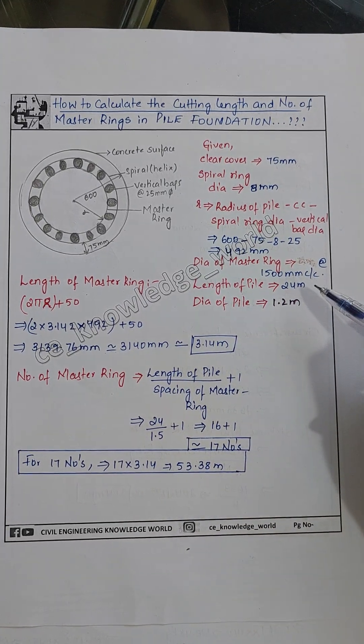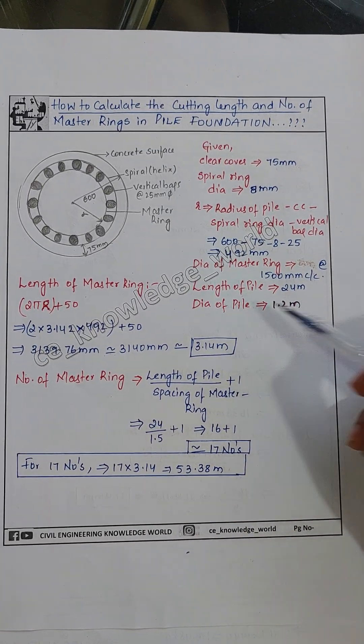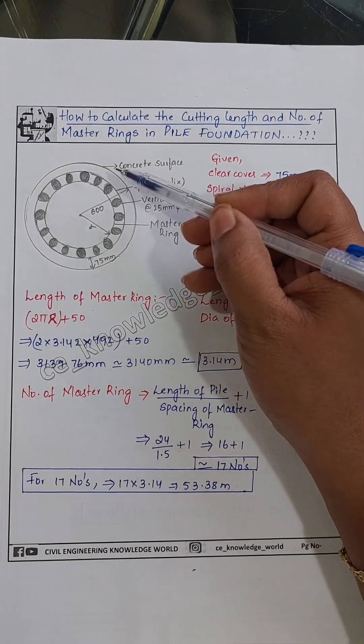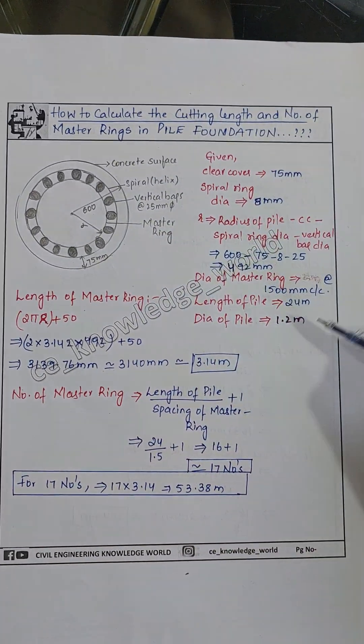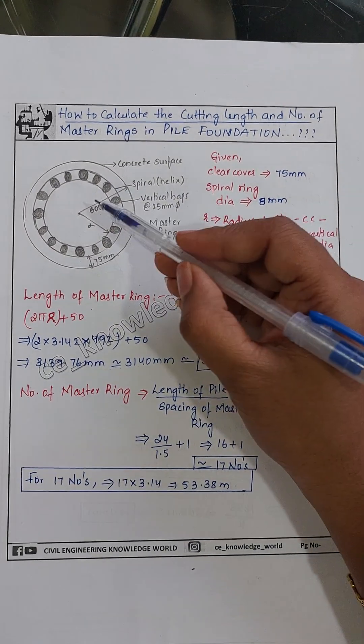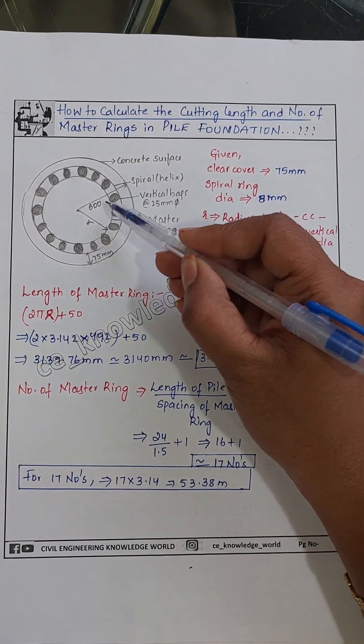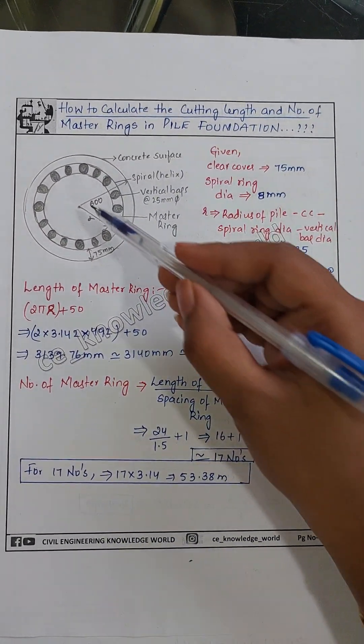The length or height of the pile is 24 meters. The diameter of the pile — from here to here — is 1200 mm. So the radius will be D divided by 2, which is 600 mm.